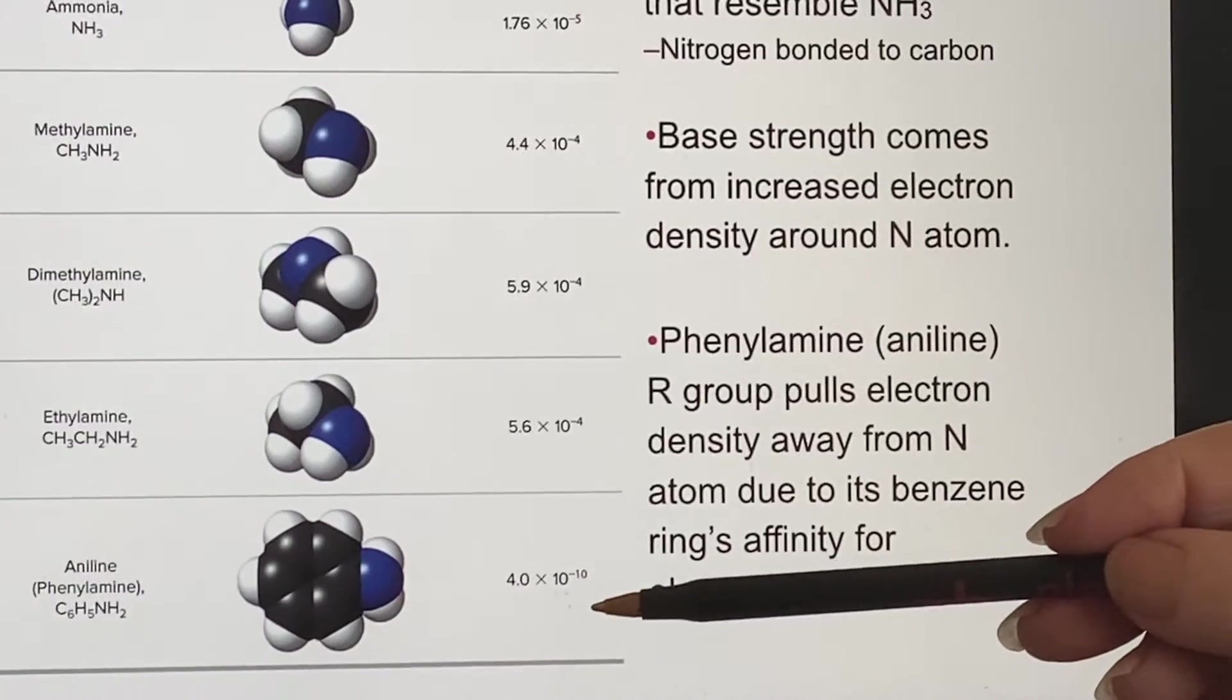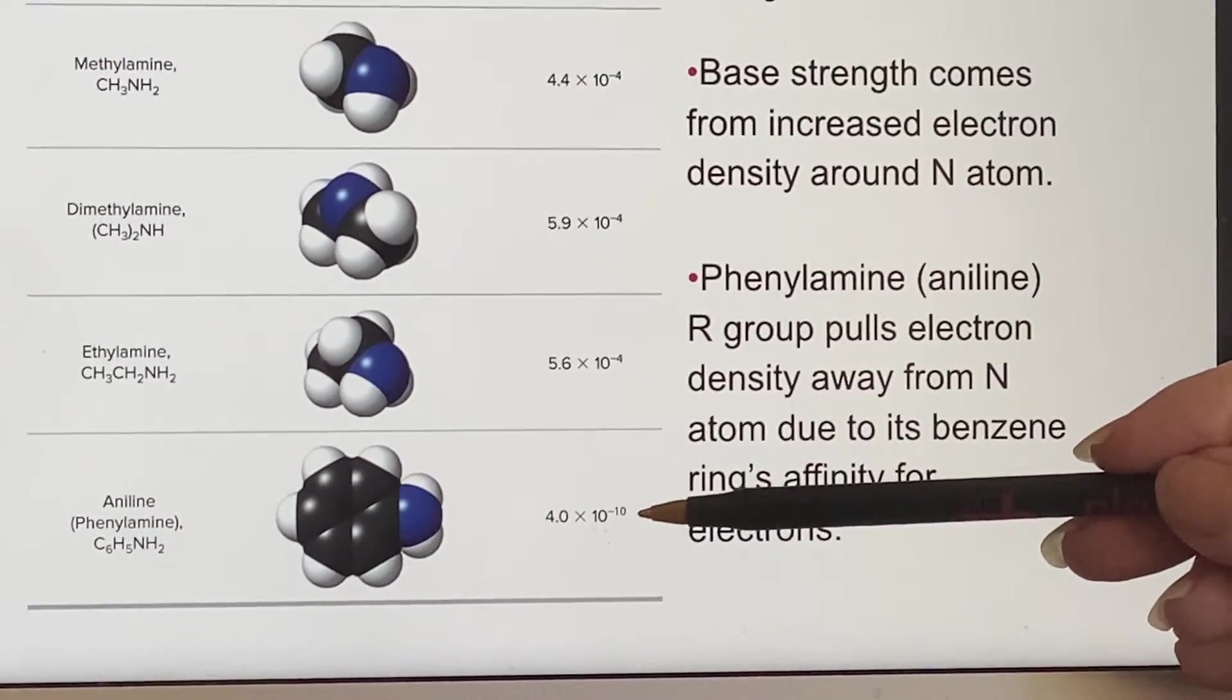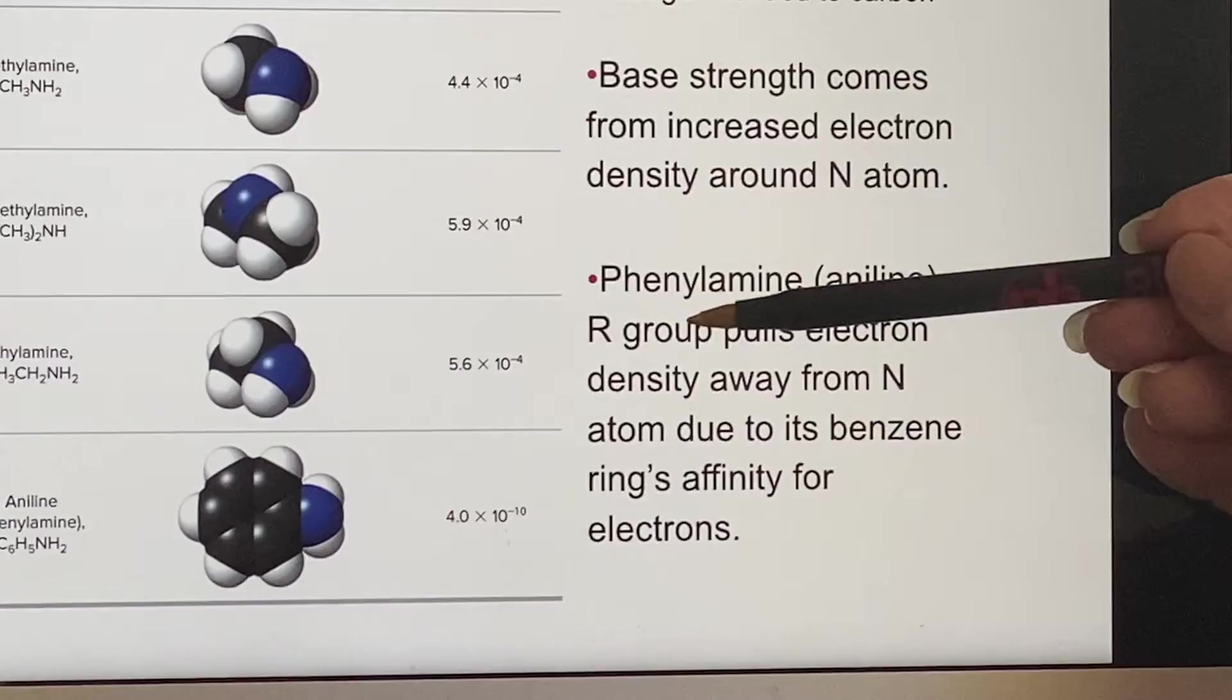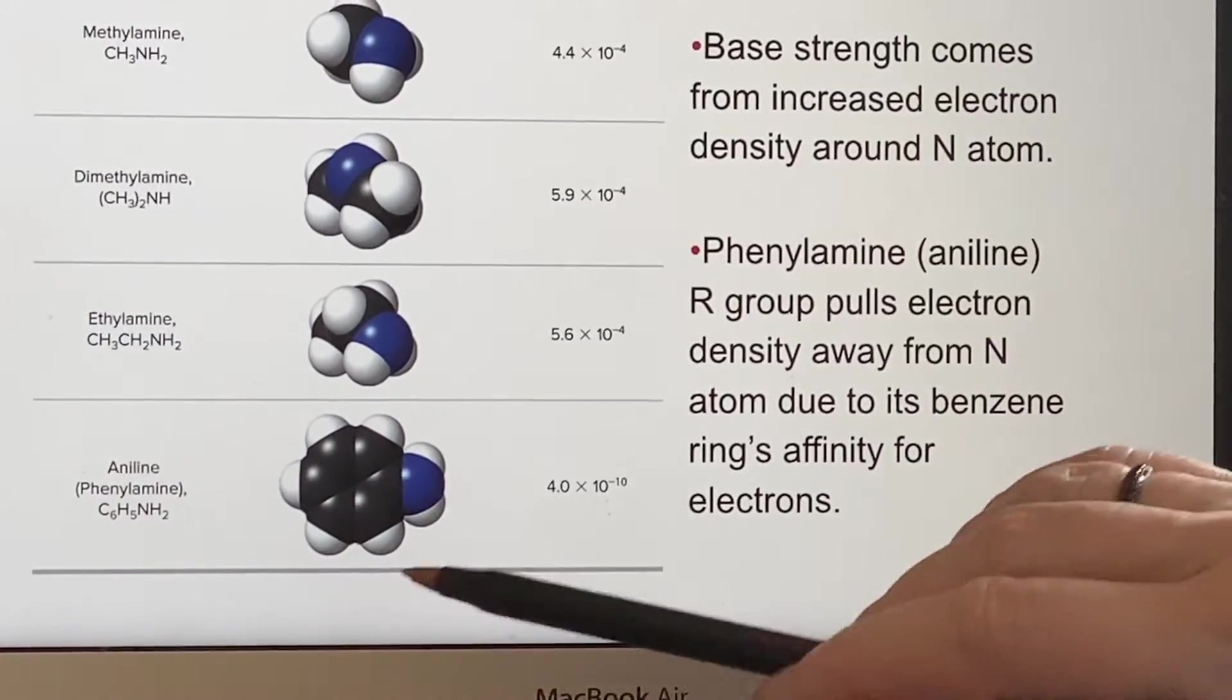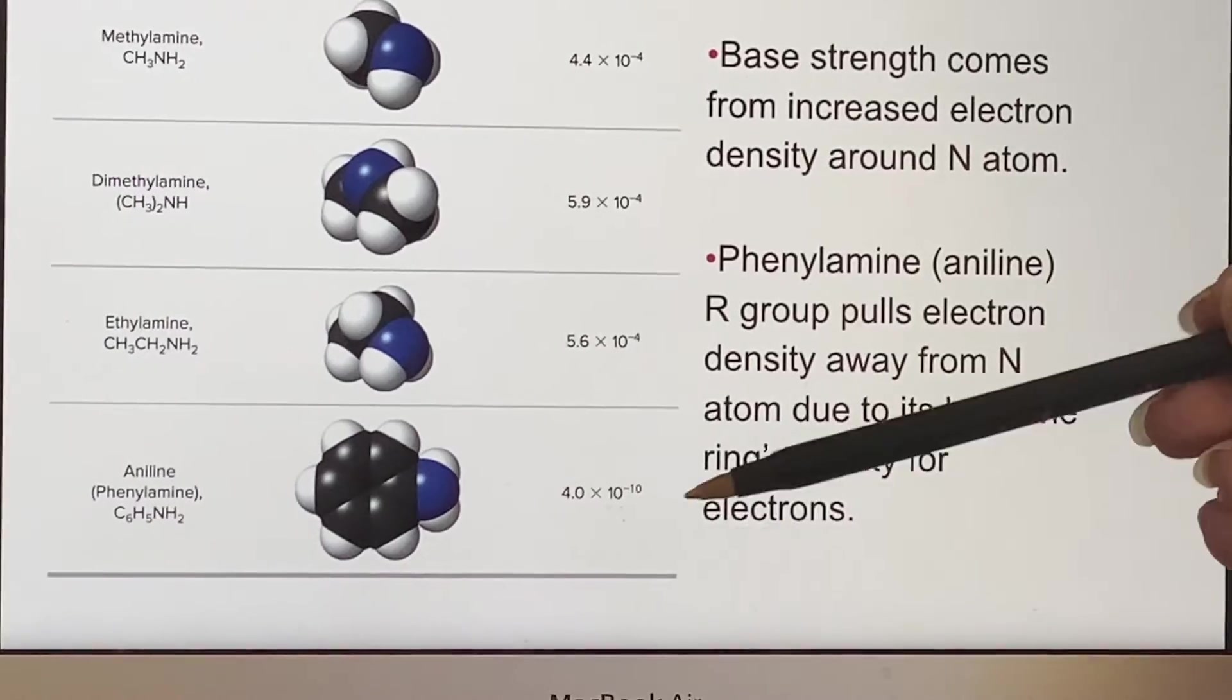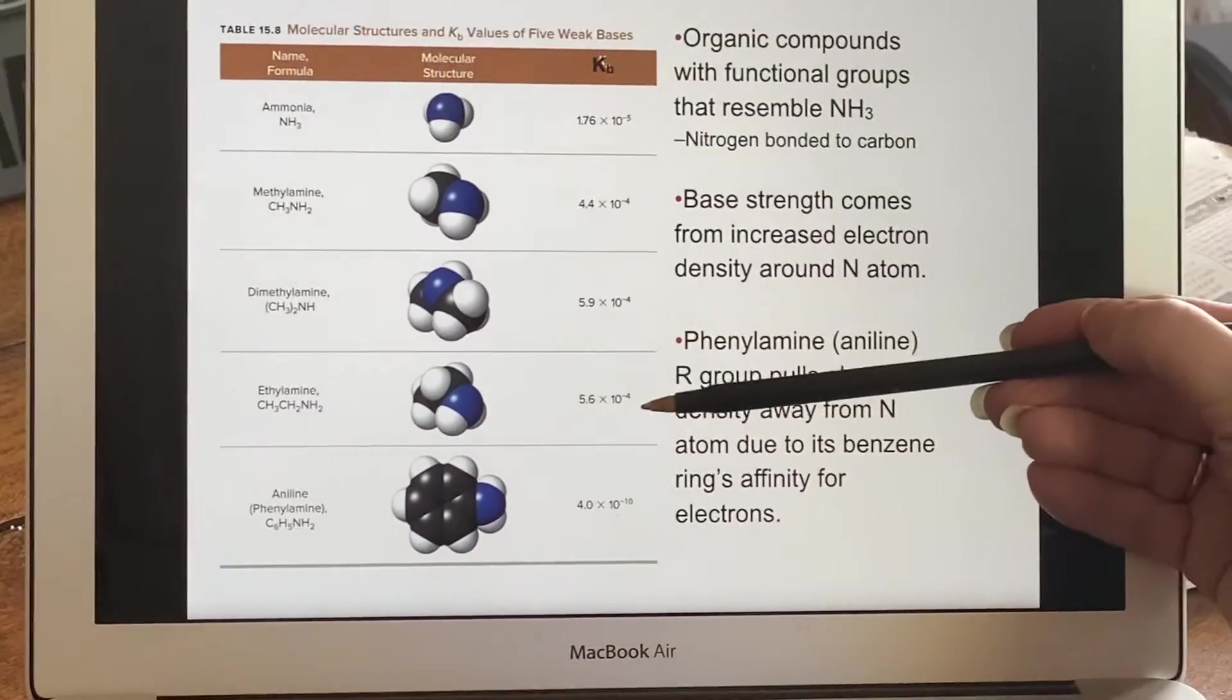This, on the other hand, is the other way around. It's very weak. See that 10 to the minus 10? That's very weak. So if you look at this, its group, very stable and loves electrons. So those electrons are being pulled away from the nitrogen instead, making this a very weak base compared to these others, which are minus fives and minus fours.